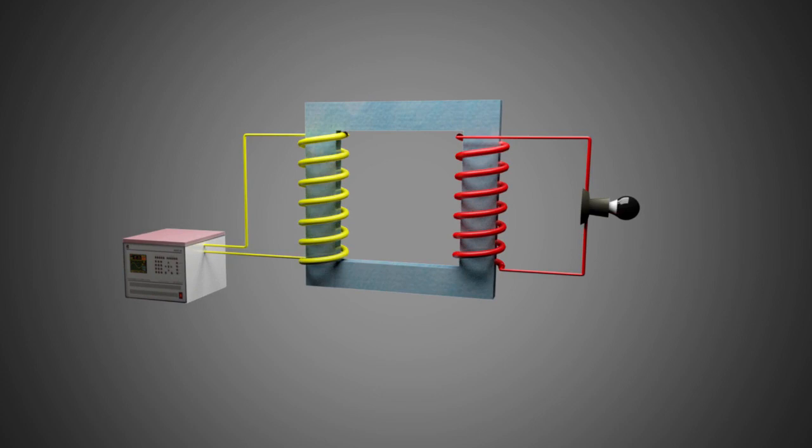In our arrangement, we have coil one wound on the left limb and connected to AC power source. This coil, according to electromagnetism principles, will produce a magnetic flux as the current will be flowing through it.